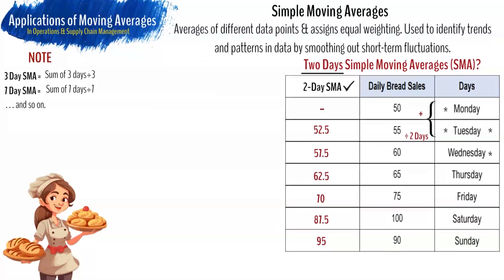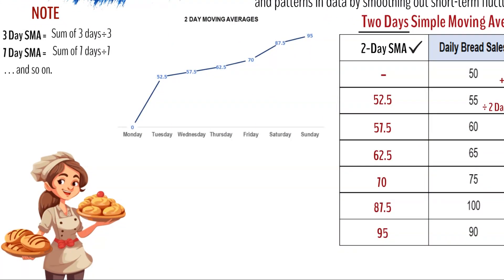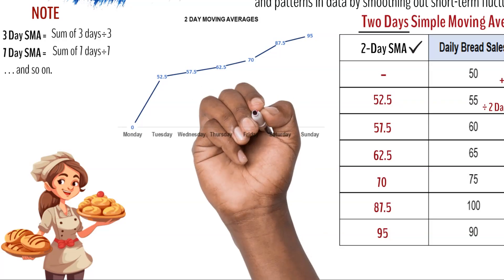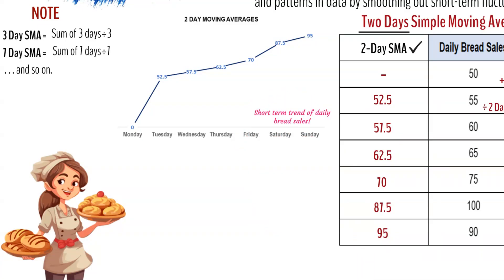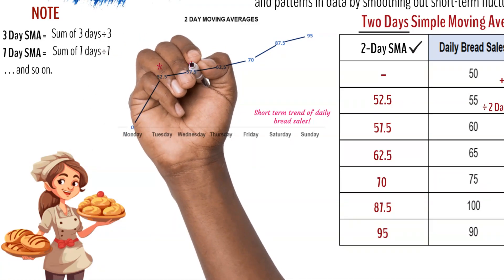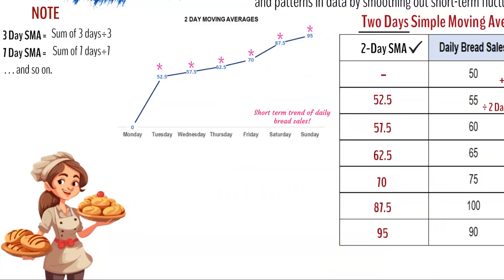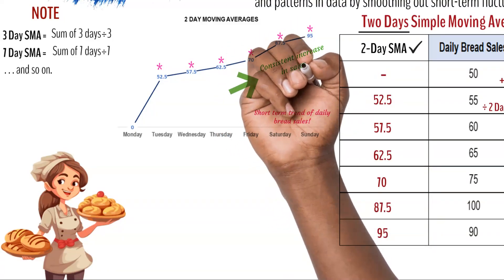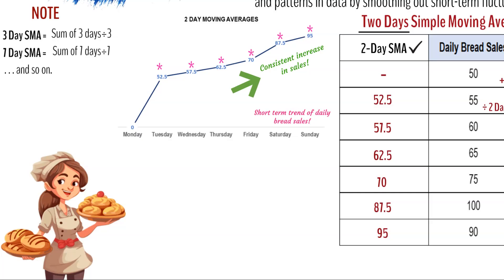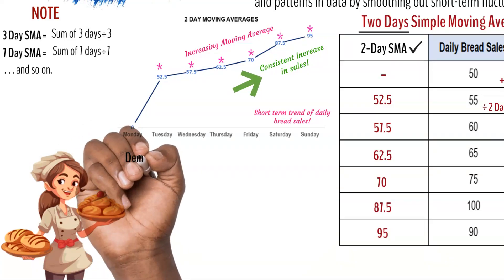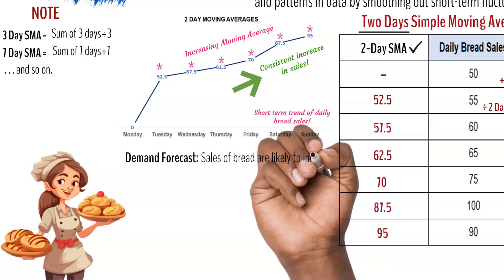Based on this example, what insight could the baker gain, or how would the baker use this information to forecast? The two-day simple moving average forecasts the short-term trend in daily bread sales. Specifically, it provides a smoothed average of sales over a two-day period, which can help the bakery owner identify immediate changes in sales patterns. We also notice that over time, the simple moving average indicates a consistent increase in sales leading up to weekends. An increasing simple moving average suggests a higher possibility of rising sales, while a decreasing one would indicate declining sales. Based on this data, the baker could forecast that demand for baked goods is likely to increase.